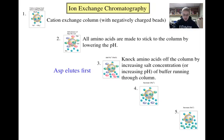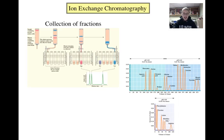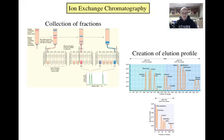Aspartate will elute first from the column. We can tell based on its pI value of 3.0, as opposed to serine's pI of 5.7 or lysine's pI of 9.8. Because aspartate has a much lower pI, at any pH above 3 it will be negatively charged. Serine will elute next, as it will be negatively charged at any pH above 5.7. And lysine will elute last, as it will be positively charged for the longest amount of time. As an ion exchange column runs, fractions of a set volume are collected as they elute off the column. Once the fractions are collected, they are analyzed and an elution profile is generated. Notice at the top of the elution profile how the pH and salt concentration of the buffers running through the column changes as the ion exchange column is run.